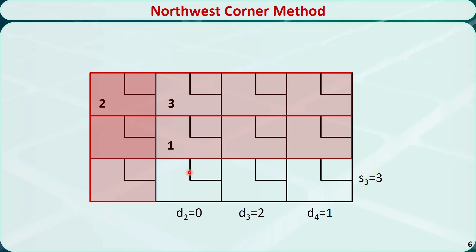Find the Northwest Corner cell in the remaining tableau, which is this one. Allocate as much as possible to this cell and subtract the allocated amount from D2 and S3. The largest amount we can allocate is 0. We put 0 here and subtract it from D2 and S3. D2 is still 0, S3 is still 3. Since D2 equals 0, we cross out this column and remove D2.